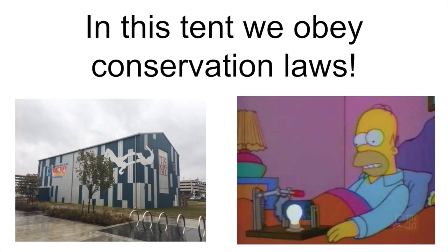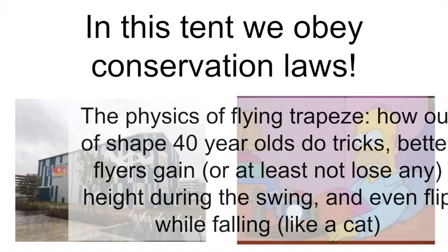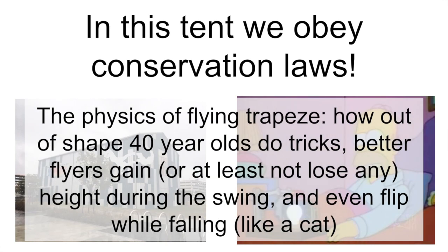I'm going to show you some things about the physics of flying trapeze. How do out of shape 40-year-olds do tricks? How better flyers gain, or at least not lose any height during the swing, and even flip over while falling like a cat. This is part 1 where I'll talk about the basics of forces and energy in the system, and how do out of shape 40-year-olds do tricks.